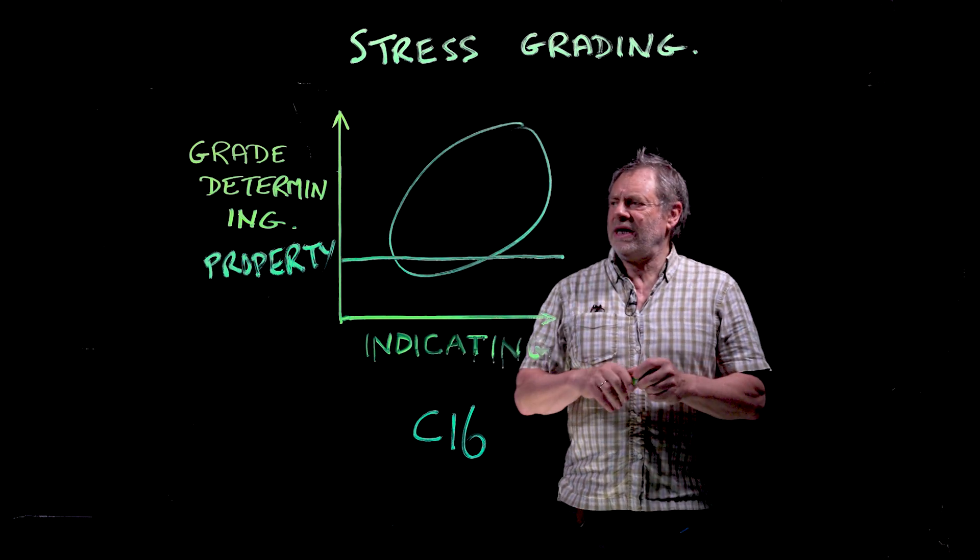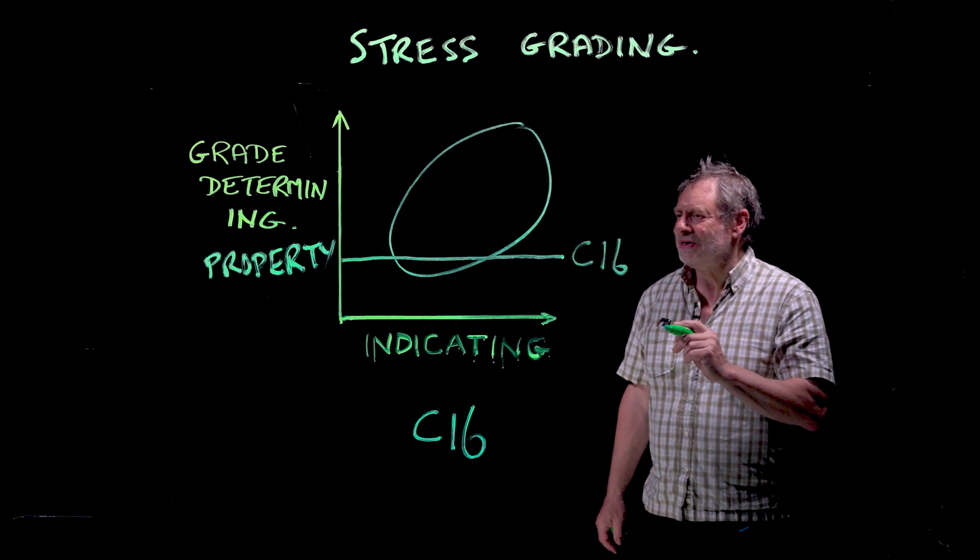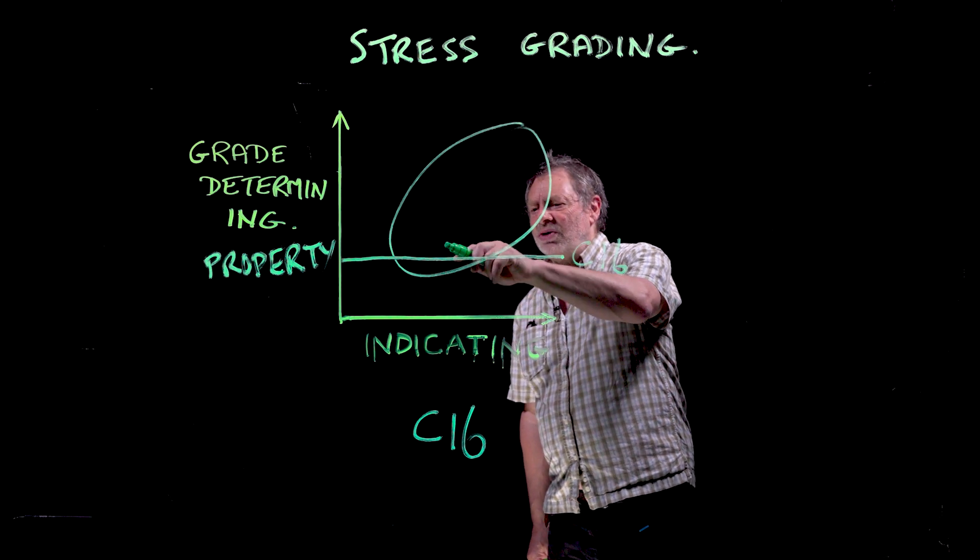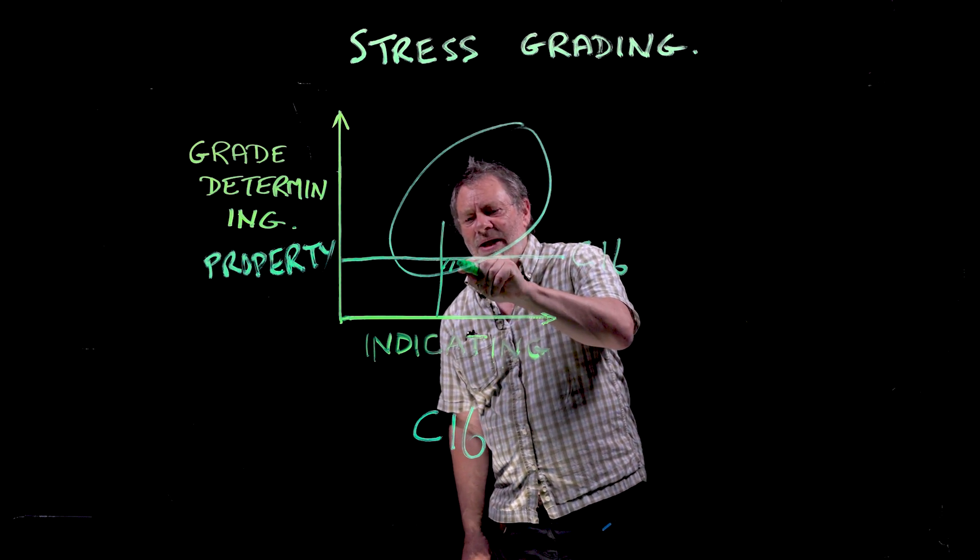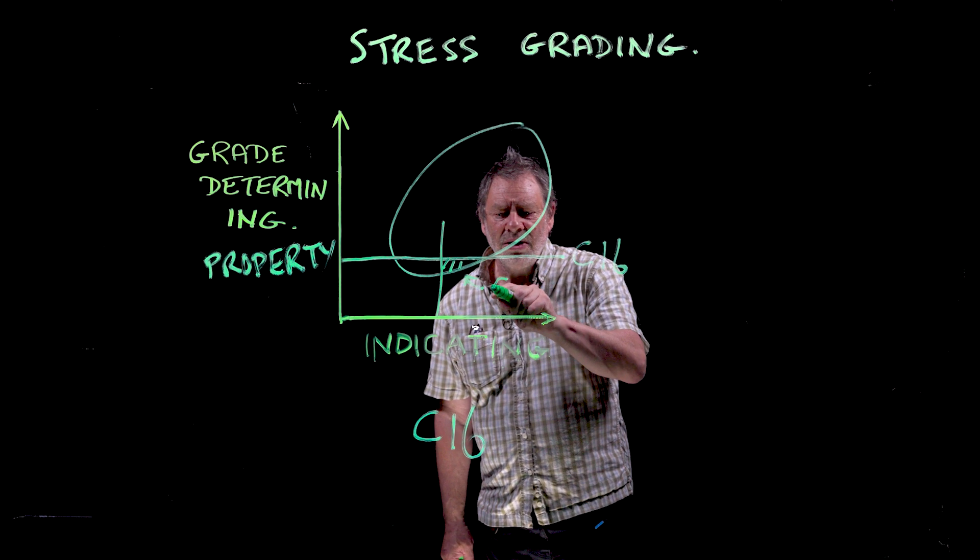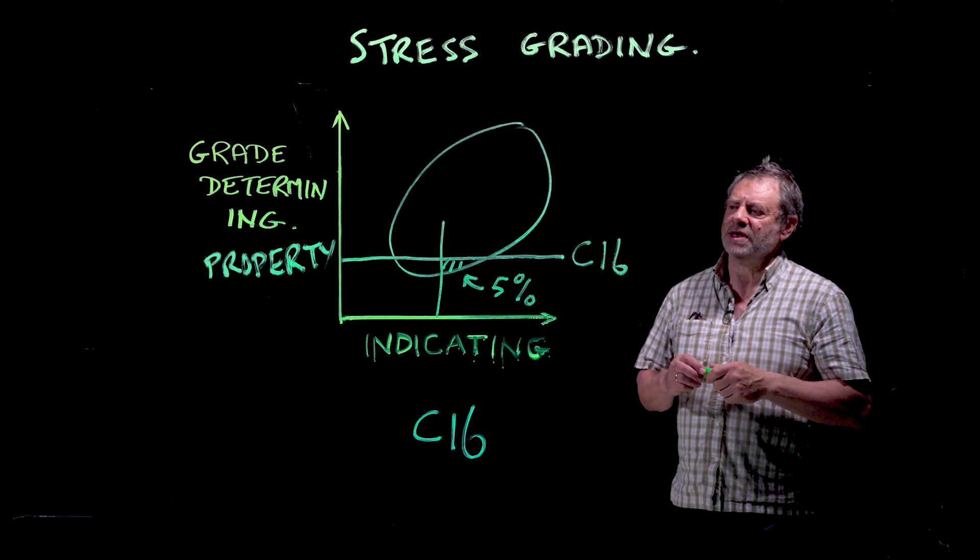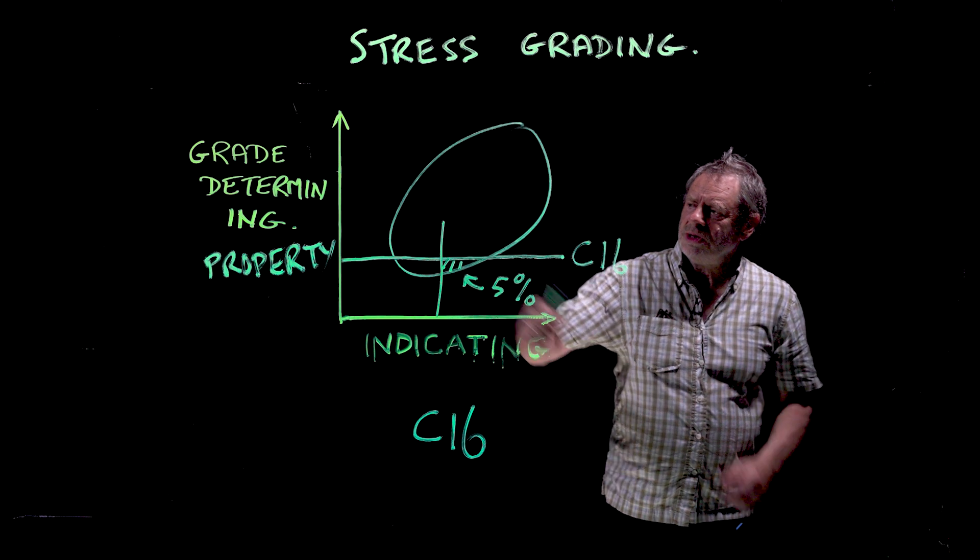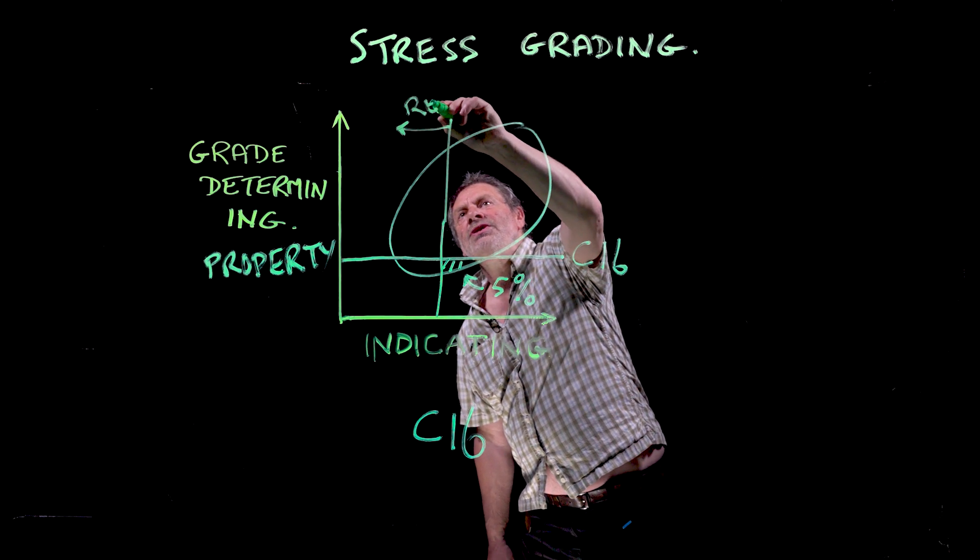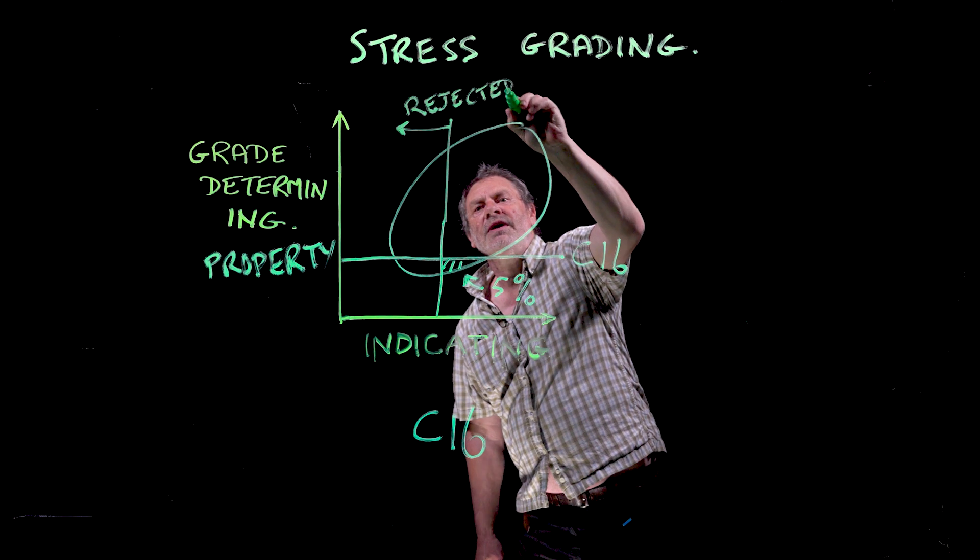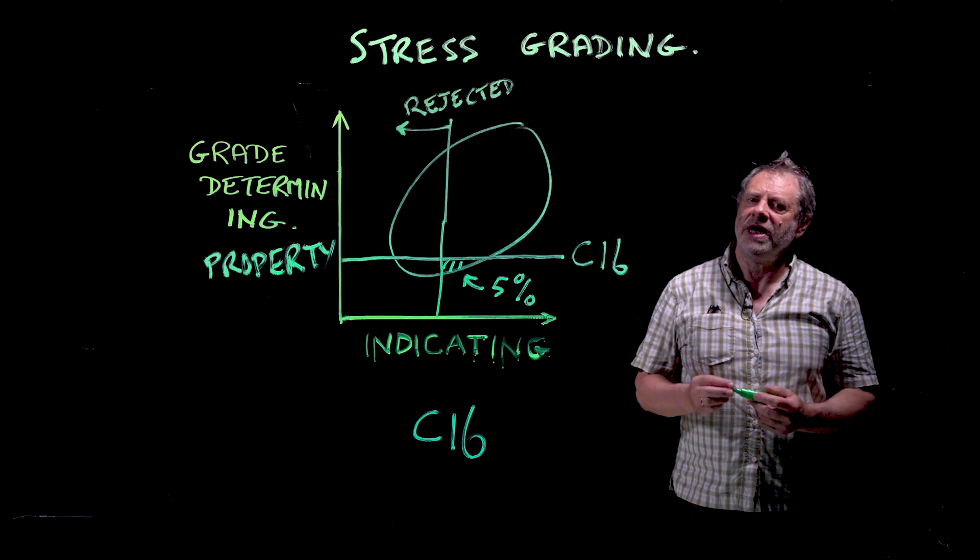Based upon what the grade determining property for C16 is - you can see why everyone gets confused - we have to choose an indicating property for this population so that within this little group here, there is no more than five percent. When we're looking at stress grading, we use a five percentile. Everything below this line gets rejected.